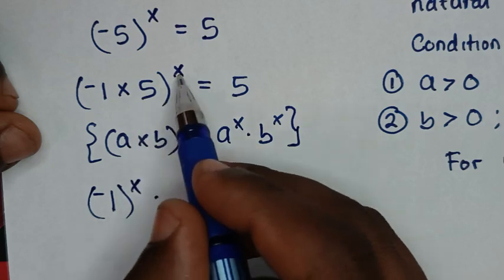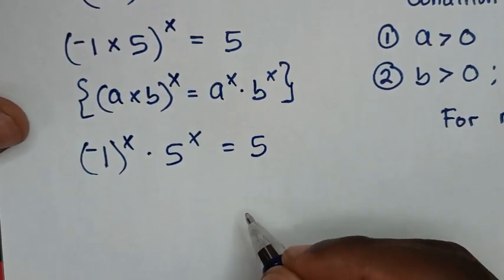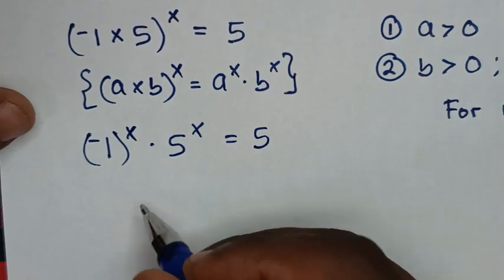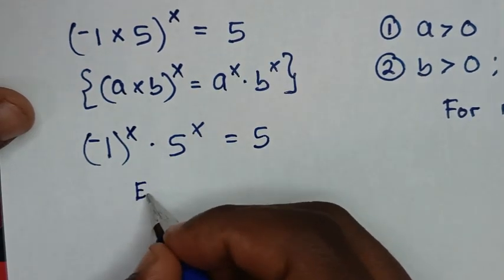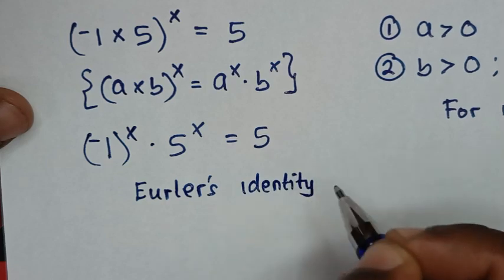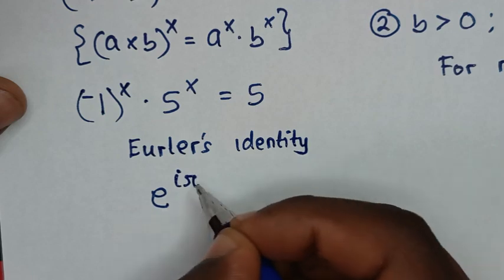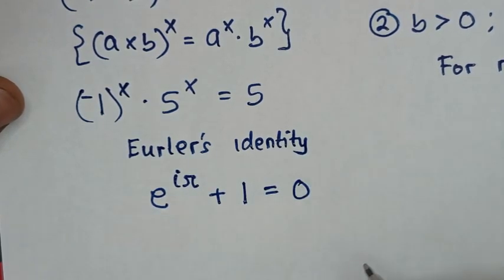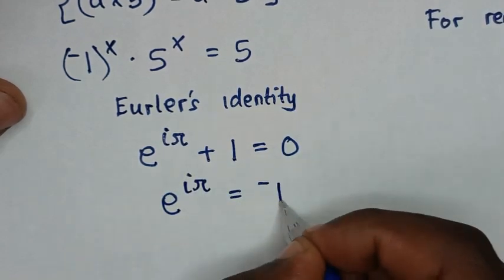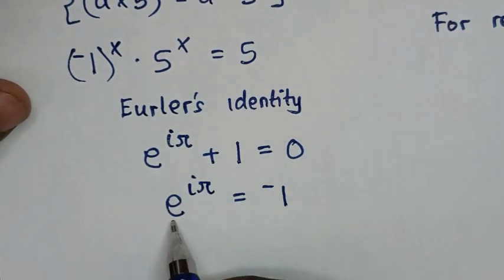From negative 1 here, we'll use Euler's identity. Euler's identity is: e raised to the power of iπ plus 1 is equal to 0. Taking 1 to the other side gives e to the iπ equals negative 1. So we substitute negative 1 with e to the power of iπ.